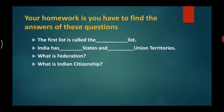Now for your homework: first, the first list is called the blank list; second, India has blank states and blank union territories; third, what is federation?; and fourth, what is Indian citizenship? That is all for now. Your chapter ends here. We will learn the next chapter in the next video. Thank you for listening, children. Goodbye. Take care.